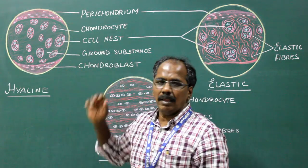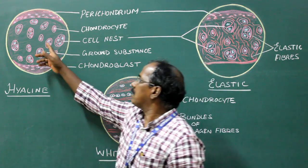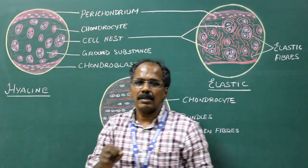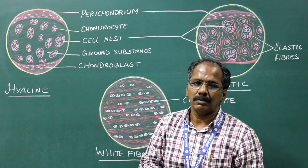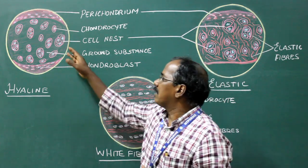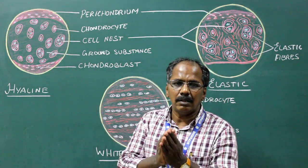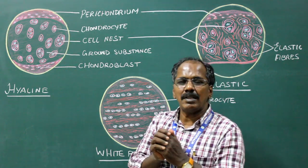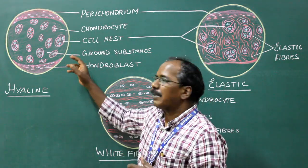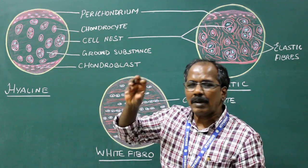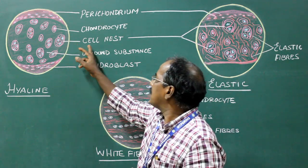The cells of the cartilage are present in a space known as lacuna. The cells are accumulated in a group of two to six cells. Presence of two to six cells in a lacuna is known as cell nest.